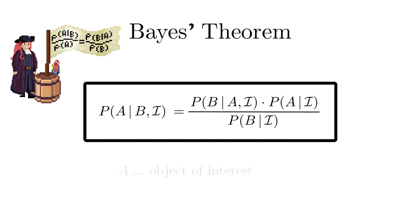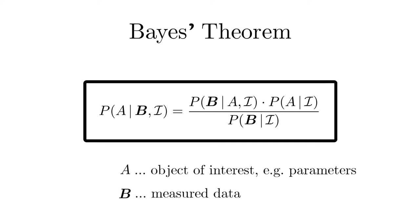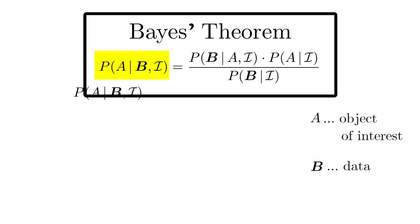Let's assume A is the object of interest, for instance parameters of a model, and B are the measured data. In this context, the terms in Bayes' theorem have the following names and meanings. The term on the left-hand side is the posterior probability. It is the probability for the quantity of interest after adding new information. Therefore posterior.